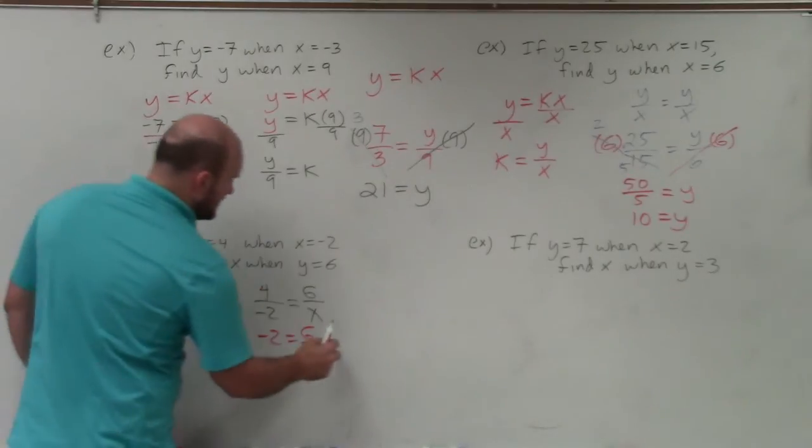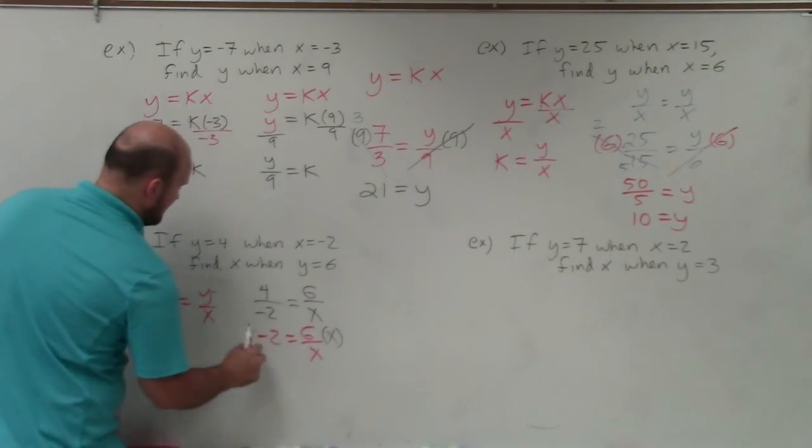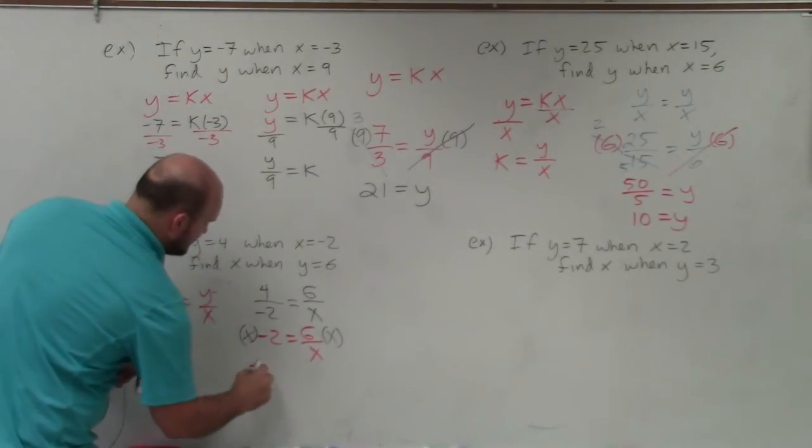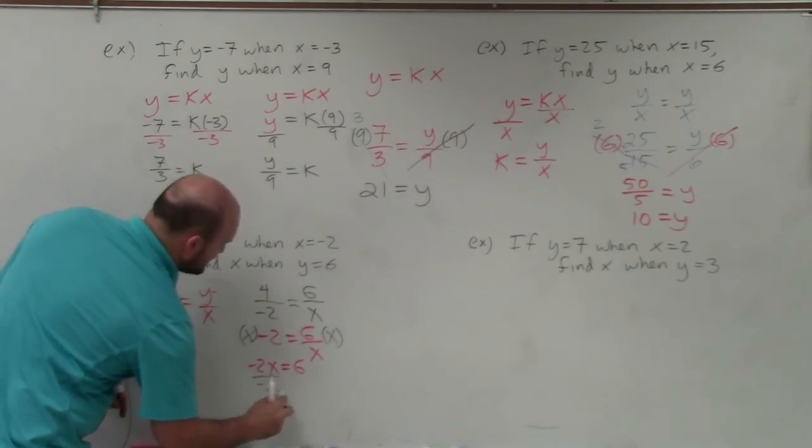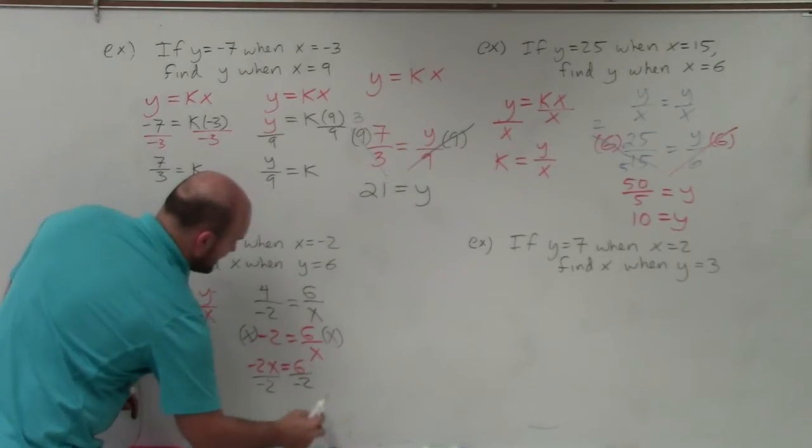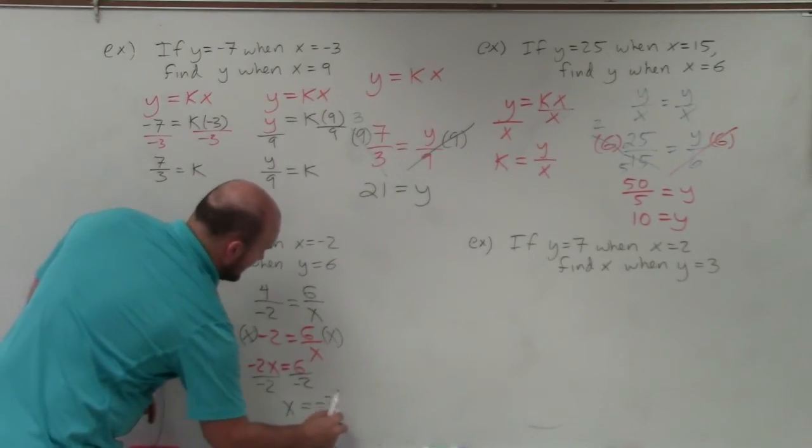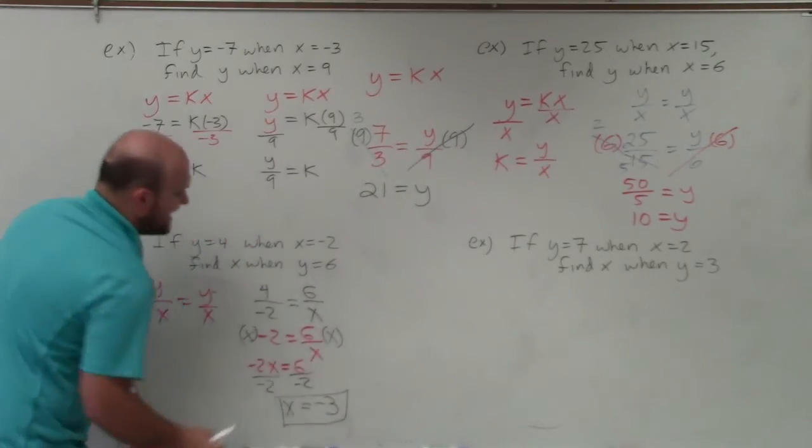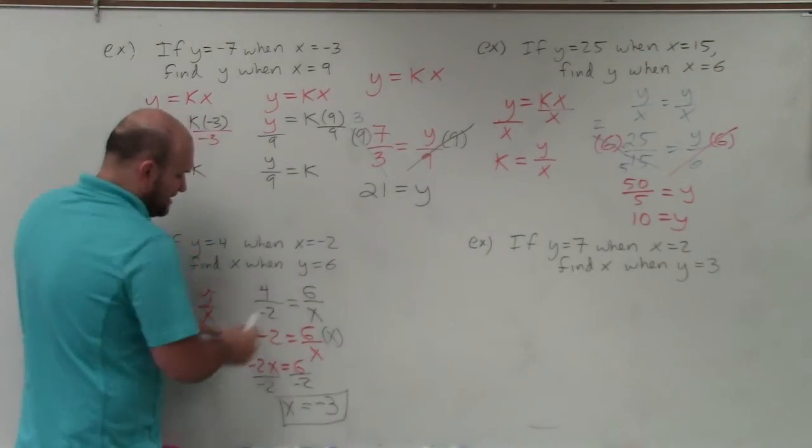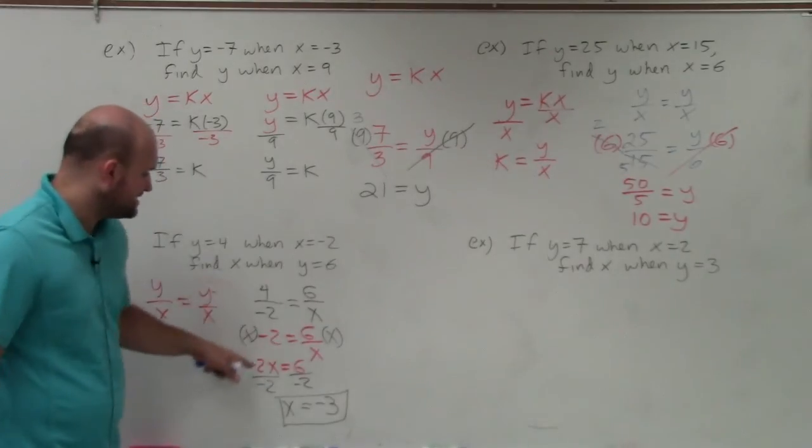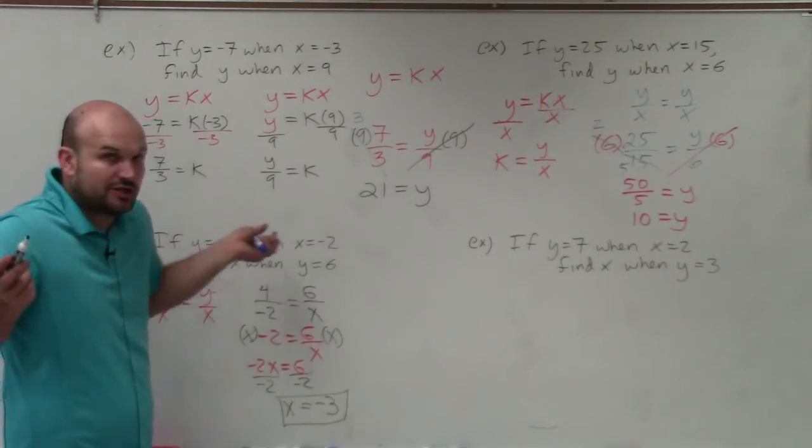To get x off the denominator, I can multiply by x on both sides. Therefore, I'm left with negative 2 times x equals 6. Now to solve for x, I divide by negative 2 and obtain x equals negative 3. I'm just using inverse operations, undoing what's happening. Get x off the bottom by multiplying on both sides, then divide by negative 2 and solve. You're good to go.